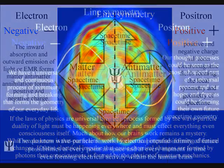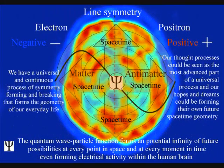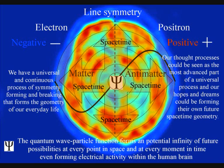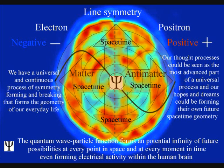Despite rapid progress, much about how the brain works remains a mystery, but what we do know is that our brains work by electrical impulses forming chemical changes. This electrical activity also forms electromagnetic fields.